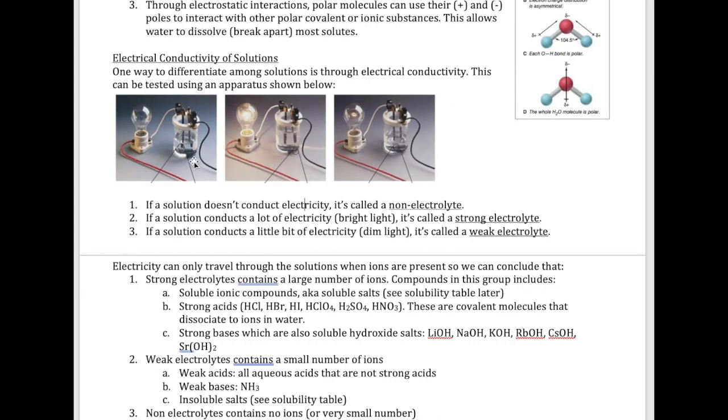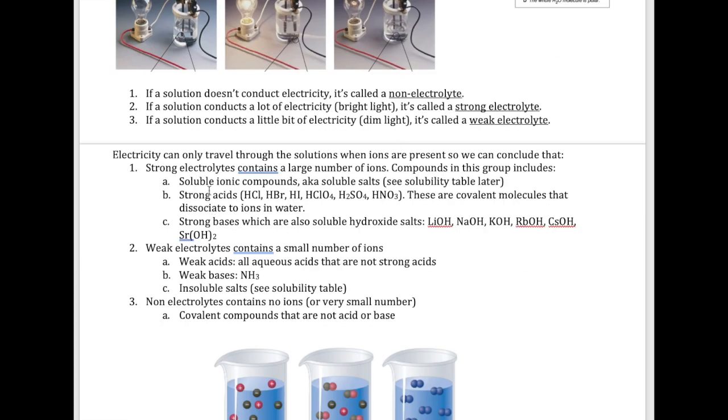The non-electrolyte has no ions in it. The strong electrolyte has a lot of ions in it. The weak electrolyte has very few ions in it. If you have a strong electrolyte, your solute would be in one of the following groups: it could be a soluble ionic compound, also known as a soluble salt. Strong acids are also considered strong electrolytes. There's six of these here that I want you to memorize: HCl, HBr, HI, HClO3, HClO4, and HNO3. These are covalent molecules, but when dissolved in water, they break apart and produce ions. The last category of strong electrolytes are strong bases, which are soluble hydroxide salts.